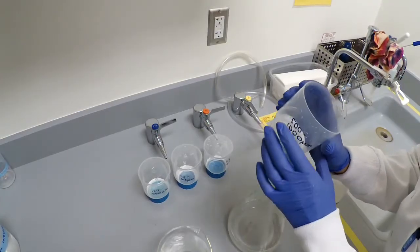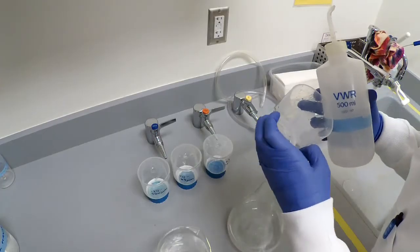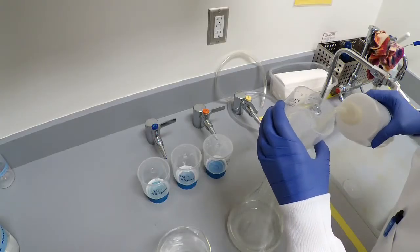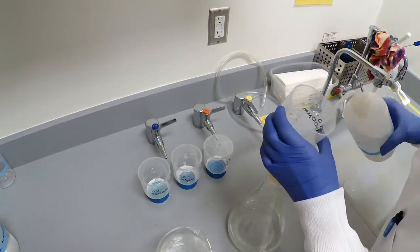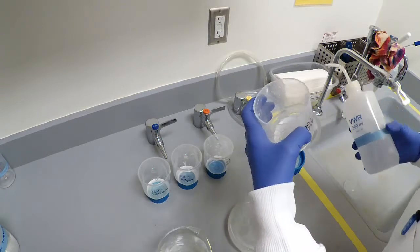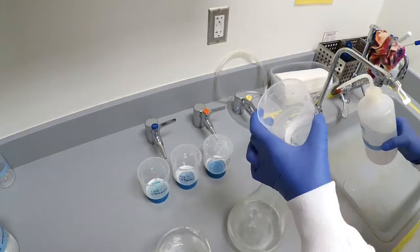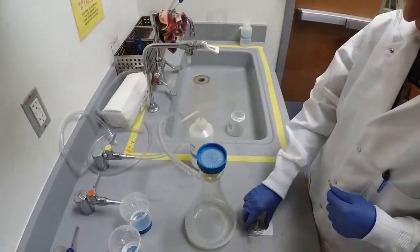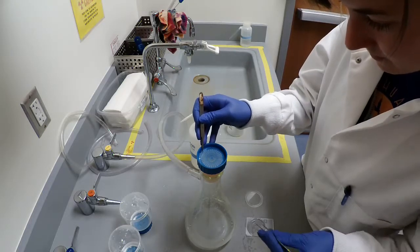Then, take off the top of the filtering unit and rinse off the edges of the filtering unit onto the filter. Remove the filter and place into a petri slide for storage until evaluation with a light microscope.